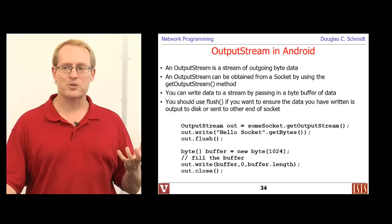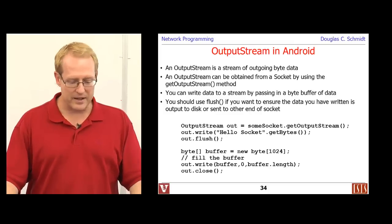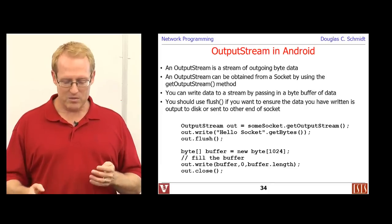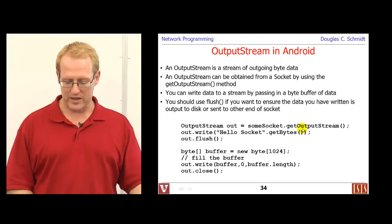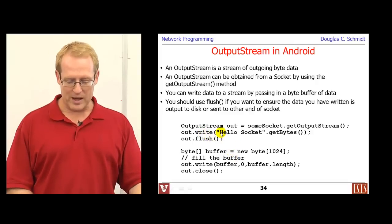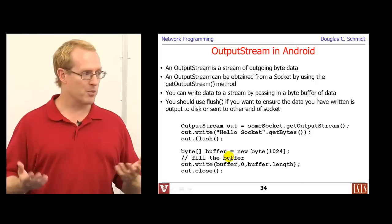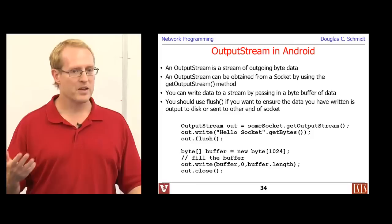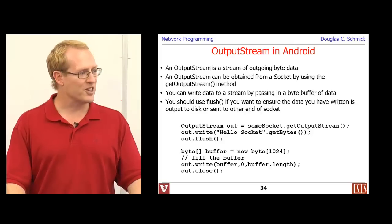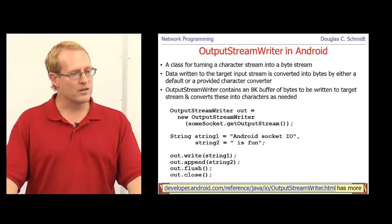So once you get the data in, then you may also, or perhaps to get the data in, you may want to create an output stream so you can talk to whoever you're connected to. So an output stream is a stream of outgoing byte data. And we can obtain the output stream from a socket by using its get output stream method. And here's some examples of this. If we have a connected socket, we can get its output stream, and then we can go ahead and write some data to that output stream and flush the data. And we can either do that by writing a character string literal, or literals, or we can create a buffer, fill the buffer up with data to our heart's content. Maybe we read it from a file or we get it from user input or someplace, and then we can go ahead and write that out. The key thing to remember is you need to make sure you flush the buffer to make sure it actually gets written to the other side.